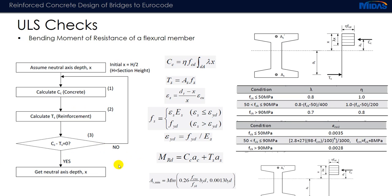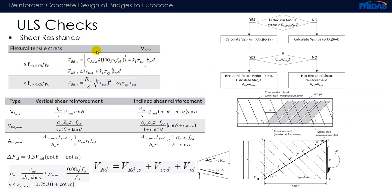Once the neutral axis is found, the lever arm about the neutral axis is checked for both compression and tension forces to obtain the limiting moment of resistance. Shear resistance is based on two conditions: if the concrete is cracked (determined by flexural stress exceeding the tensile limit), one equation is used; if uncracked, another equation applies. If the applied shear exceeds either value, vertical shear reinforcement must be designed; otherwise nominal shear reinforcement is sufficient.